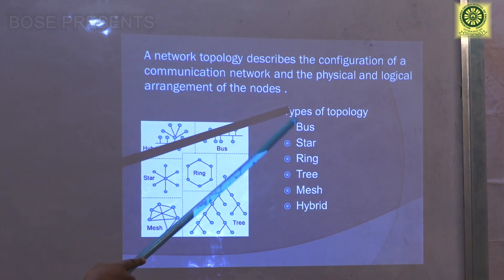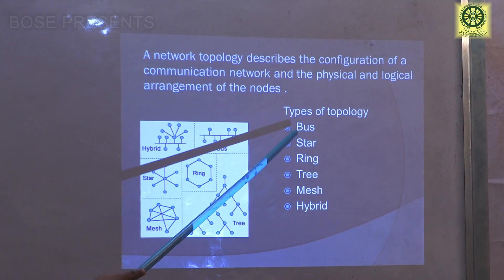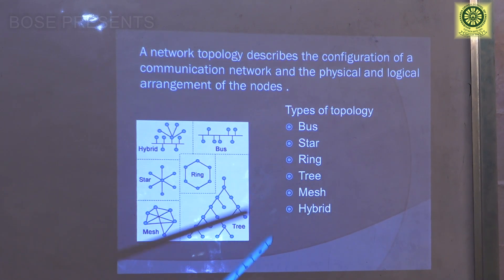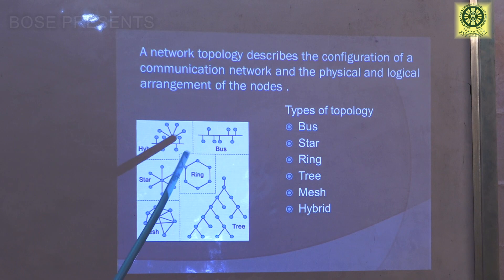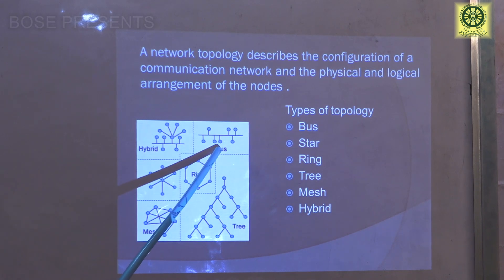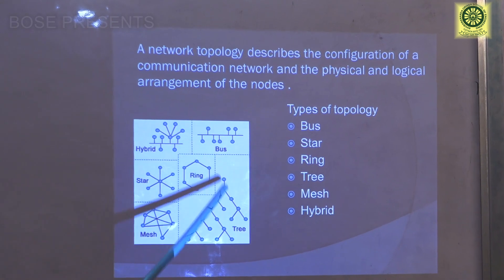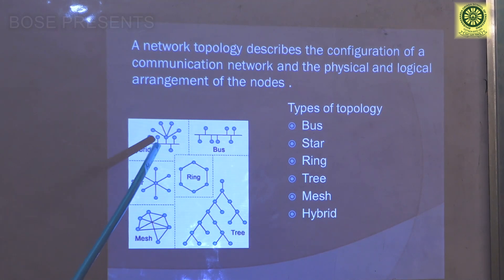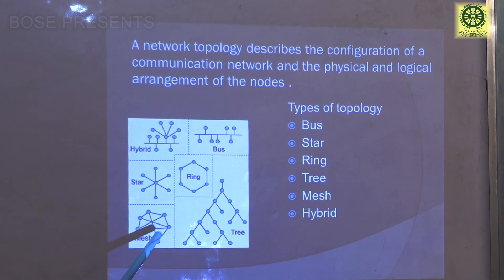The types of topology are bus, star, ring, tree, mesh, and hybrid topology. This is the logical diagram of a topological network. This is the bus topology, this one is tree, this one is ring, and this one is star. This is hybrid topology and this picture describes mesh topology.